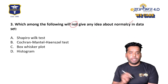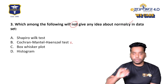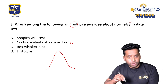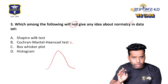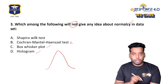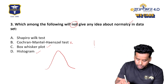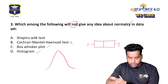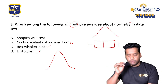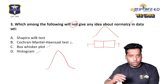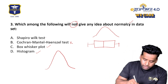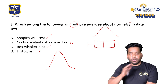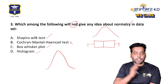Which of the following will not give an idea about normalcy of the data? Answer is option B. A histogram, when you plot the frequency distribution, can show a bell-shaped curve indicating normalcy. A box-whisker plot with the median in the center also indicates normal distribution. The Shapiro-Wilk test can tell normalcy — if deviation is more it is not normal data; if deviation is less it is normal data.